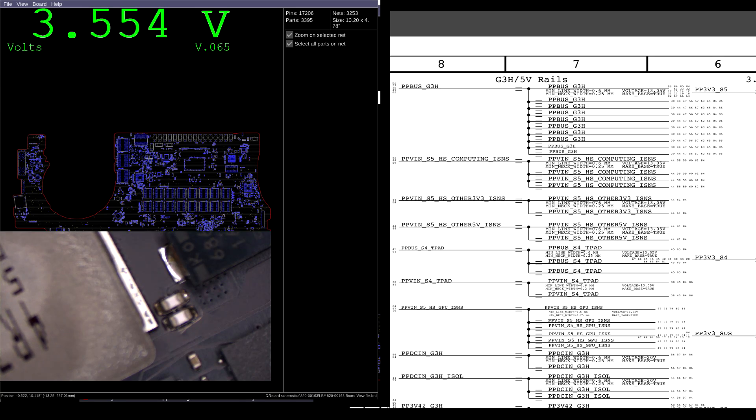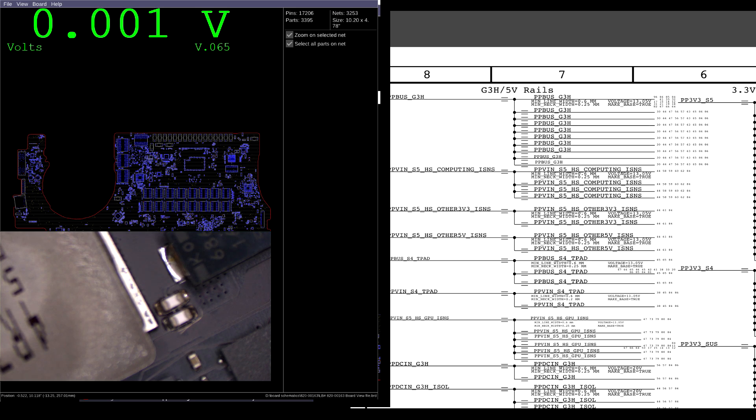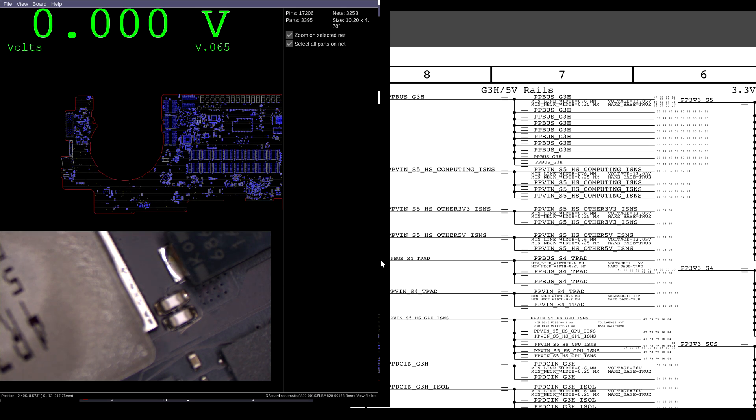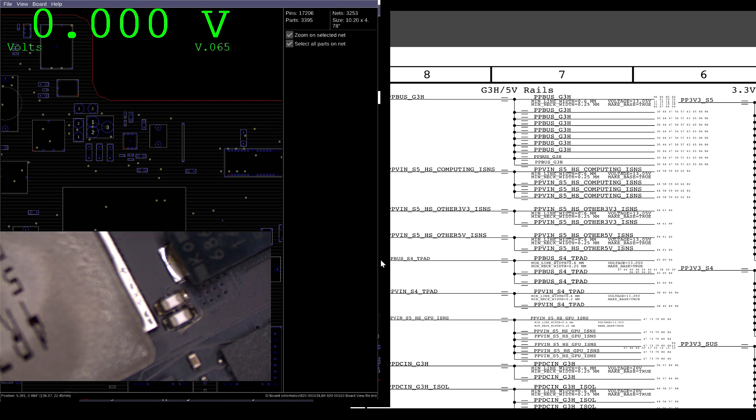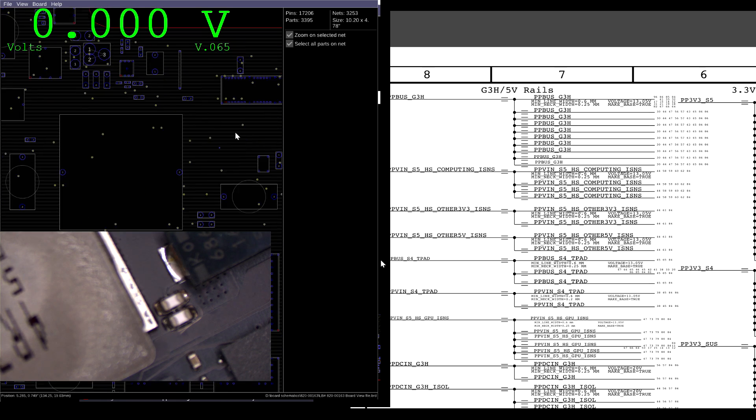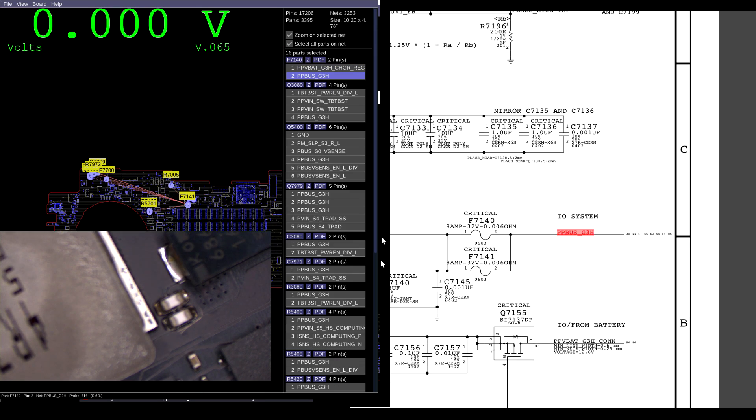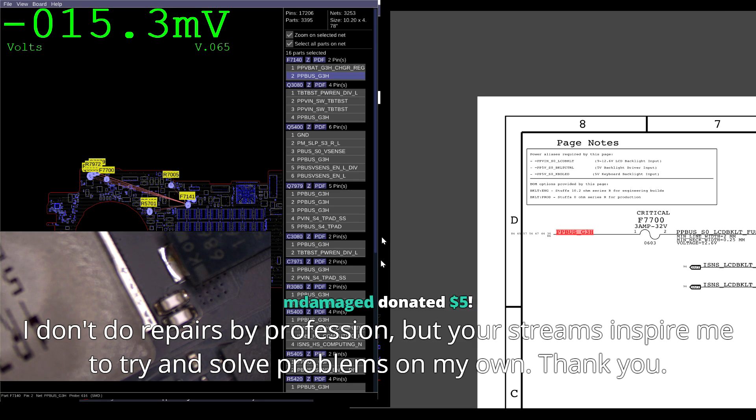We have a guest today that's going to be fixing a MacBook board. So it looks like PP bus G3 hot is 3.54. And it says over here that it's supposed to be 13.05, which is wrong. It's supposed to be 12.56. The schematic gets it wrong again. So let's figure out where we'd find that. What creates PP bus G3 hot?